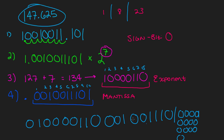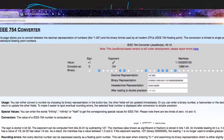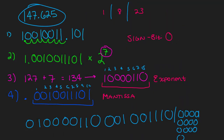As you can see, we've now converted this number into IEEE 754 floating point. I'll put a link in the description to a checker. Our number was 147.625, and running the conversion gives us: 0 10000110 00100111 10100000 0000000 — confirming our conversion is correct.